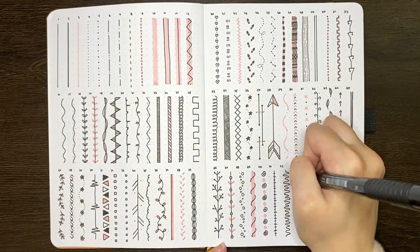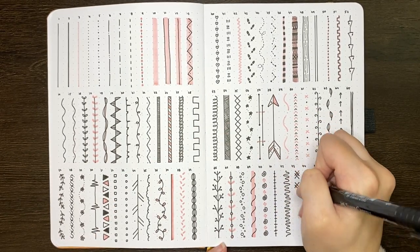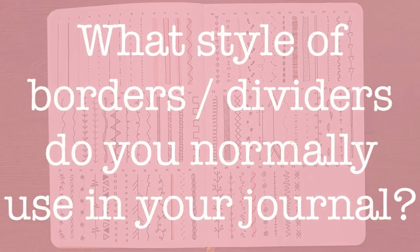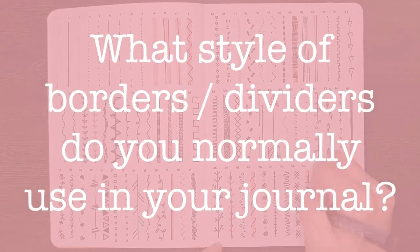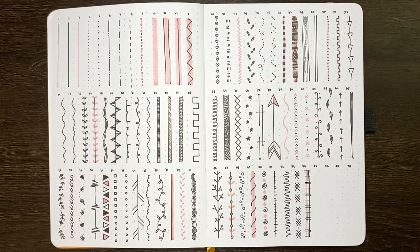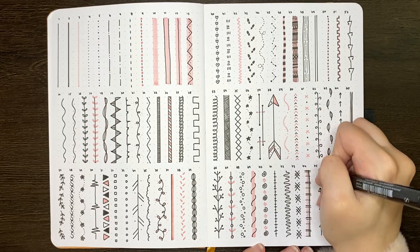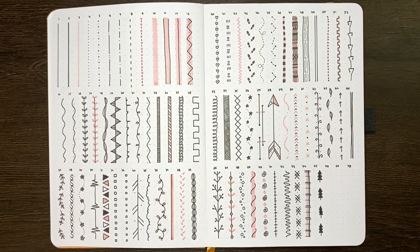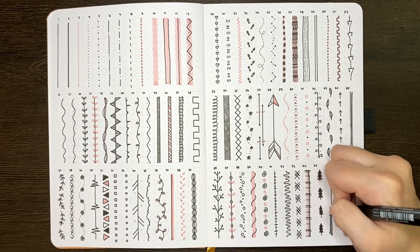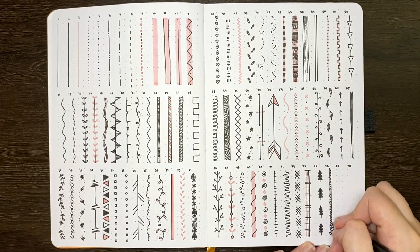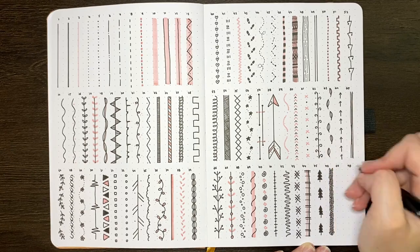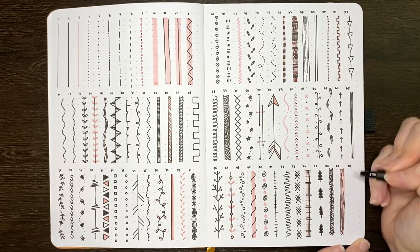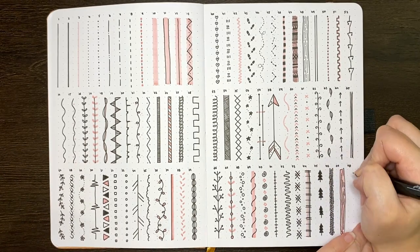Question of the day for you though — when you set up your journal, what's the style of border or divider that you most commonly gravitate towards? As I said, I typically keep mine simple with 1, 2 and 3. But of the decorative styles, number 20 — that kind of ripped paper edge — is for sure my favourite.